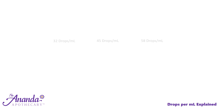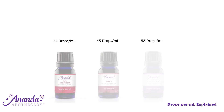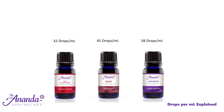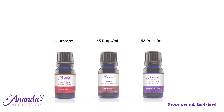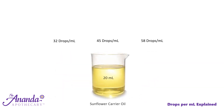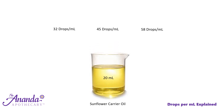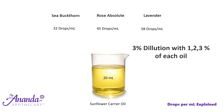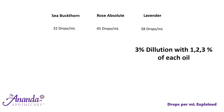Now let's try using some slightly different, more complex numbers. We're going to use the same oils — sea buckthorn, rose, and lavender — but we're going to vary the concentration gradient. Instead of a 3% total, let's make it 6% using varying concentrations for each oil. So we'll use 1, 2, and 3% of sea buckthorn, rose absolute, and lavender.